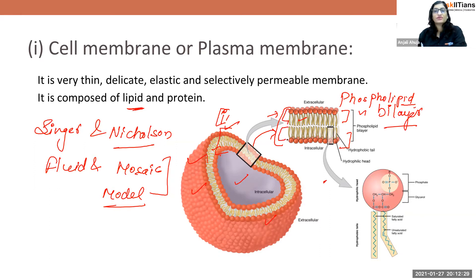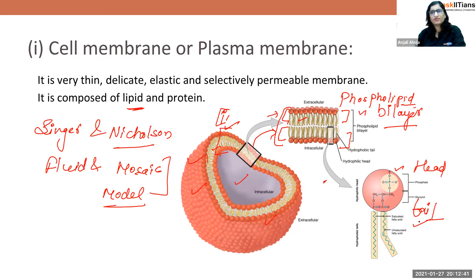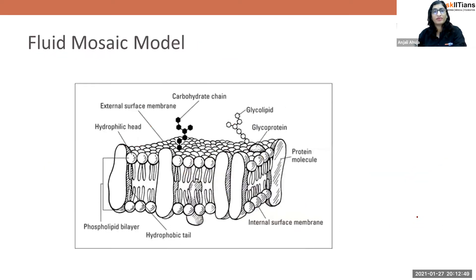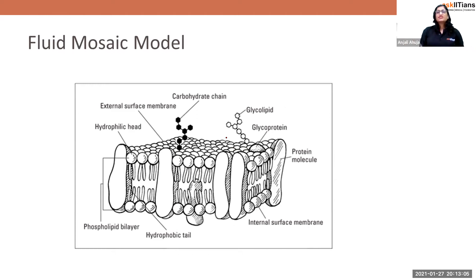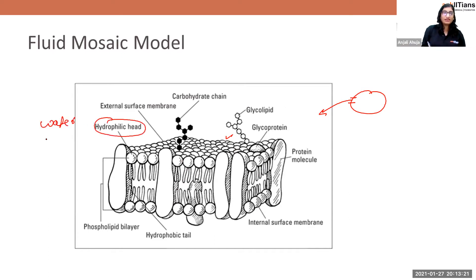Into each phospholipid layer, there is a head and a tail. The head is hydrophilic — water-loving, attracted to water. The tail is hydrophobic — water-hating or water-repelling. This is the basic structure of the phospholipid bilayer, and this black-and-white diagram is the easiest one to understand and draw.